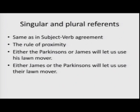When you have two referents, one singular and one plural, which pronoun do you use? As we saw in subject-verb agreement, we apply the rule of proximity — whatever is closest to the pronoun. Example: 'Either the Parkinsons or James will let us use his lawn mower.' Parkinsons is plural, James is one person, but James is closest — third person singular masculine — so we use 'his.' But if the order is reversed: 'Either James or the Parkinsons will let us use their lawn mower' — Parkinsons is now closest, so we use third person plural 'their.'